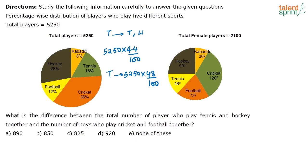How many girls play cricket and football? You have 2100 into — here you have 120 degrees and 72 degrees. So total degrees is nothing but 120 plus 72, that is 192. 192 divided by 360 because this is a circle and the values are given in terms of degrees.